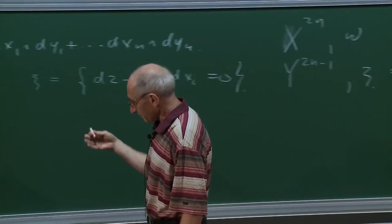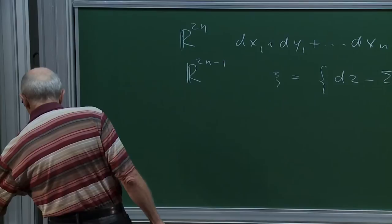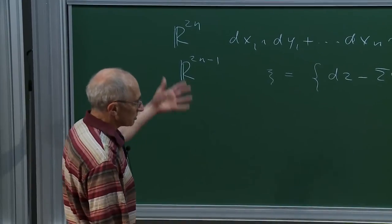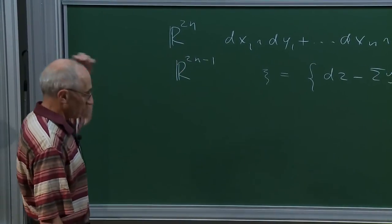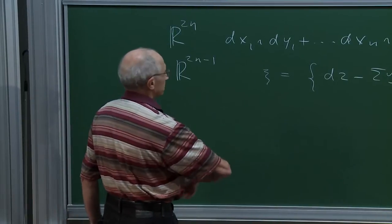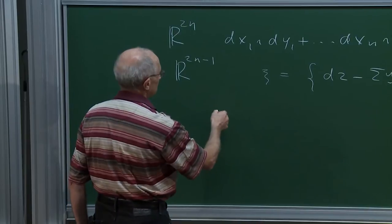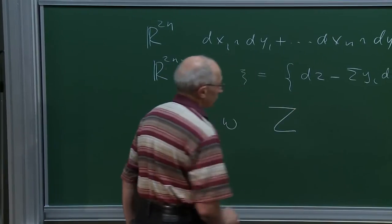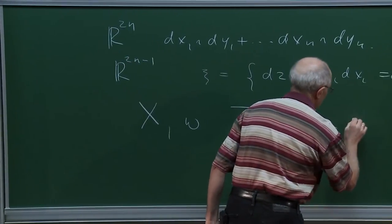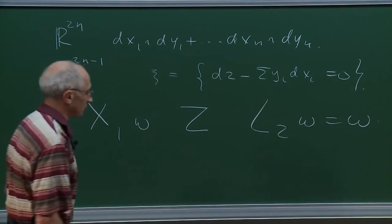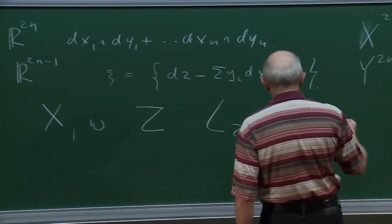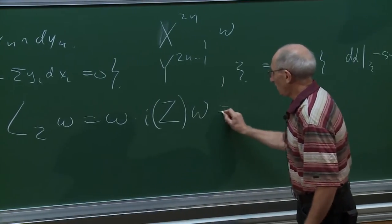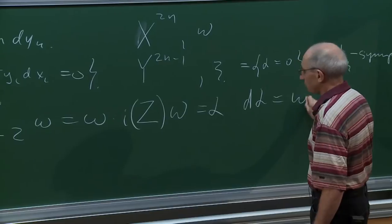At first glance these look like completely different structures, but in fact they are almost the same — contact structure is just the odd-dimensional analog of symplectic structure. You can see this from the following construction: on a symplectic manifold, you have a Liouville vector field. It's a vector field such that the Lie derivative of omega equals omega, or equivalently, the interior product of z and omega gives a form alpha which is a primitive of the symplectic form.